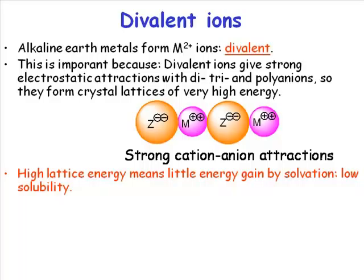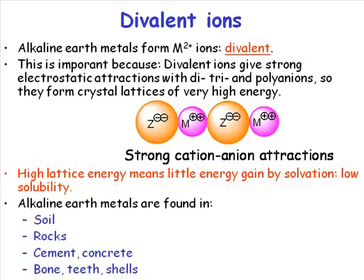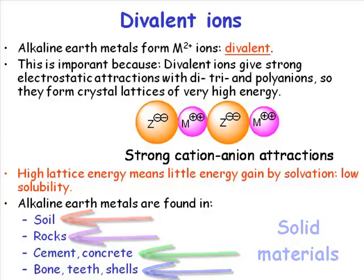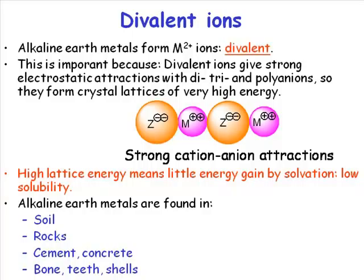But you also have very low solubility for these species, because in order to dissolve something you have to break up the ionic lattice, and it's very difficult to break up these ionic lattices because the Coulombic interactions are so strong. So alkaline earth salts, unlike alkaline metal salts — and this is a very important distinction — are really quite poorly soluble. The consequence is that we find these things occurring in solid materials; we don't see them so much in seawater or as ions in blood plasma, we see them in solid-type materials.